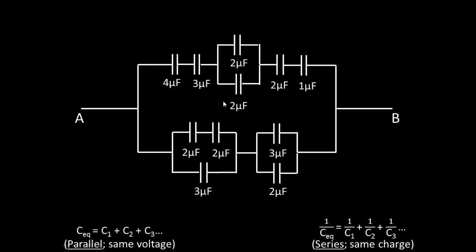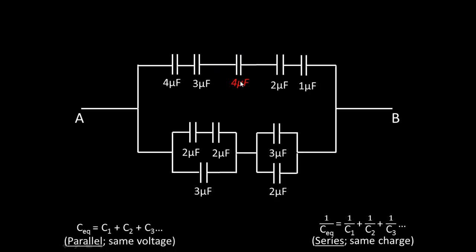We can really start anywhere with this one. I'm going to start right here in the top branch in the middle, where we're going to add this two microfarad capacitor with this two microfarad capacitor to find the equivalent capacitance of this parallel branch. Since these are in parallel, we follow the parallel rule and just add them: two plus two equals four microfarads. We can go ahead and replace this branch with the equivalent capacitor — that's four microfarads.